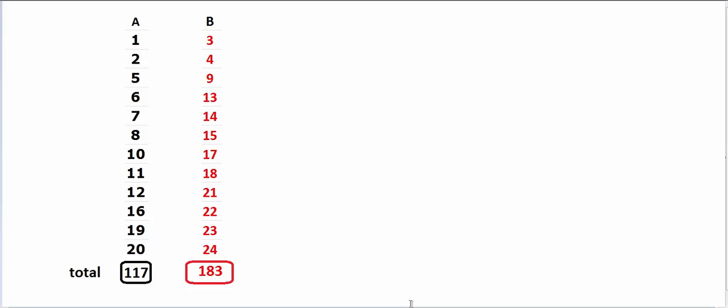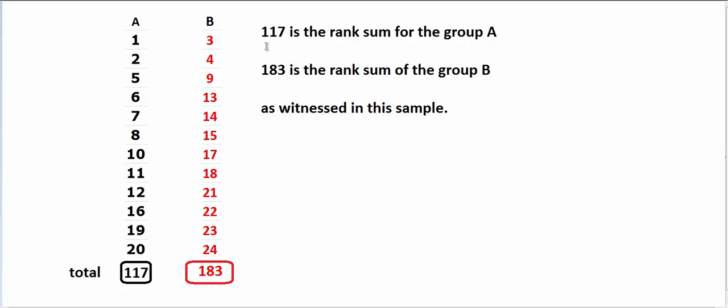So here we come back to our original situation. The rank sum for route A is 117 and that for route B is 183. And we want to compute the probability that we will see such a low or lower rank sum in case there is no difference between the two distributions.